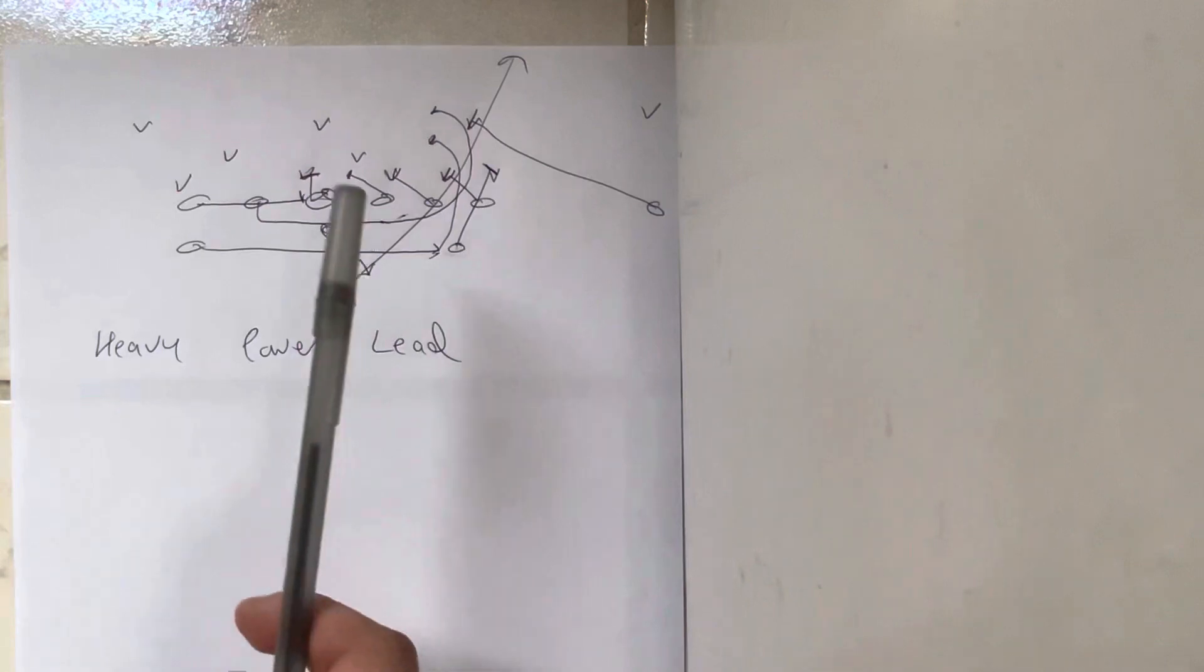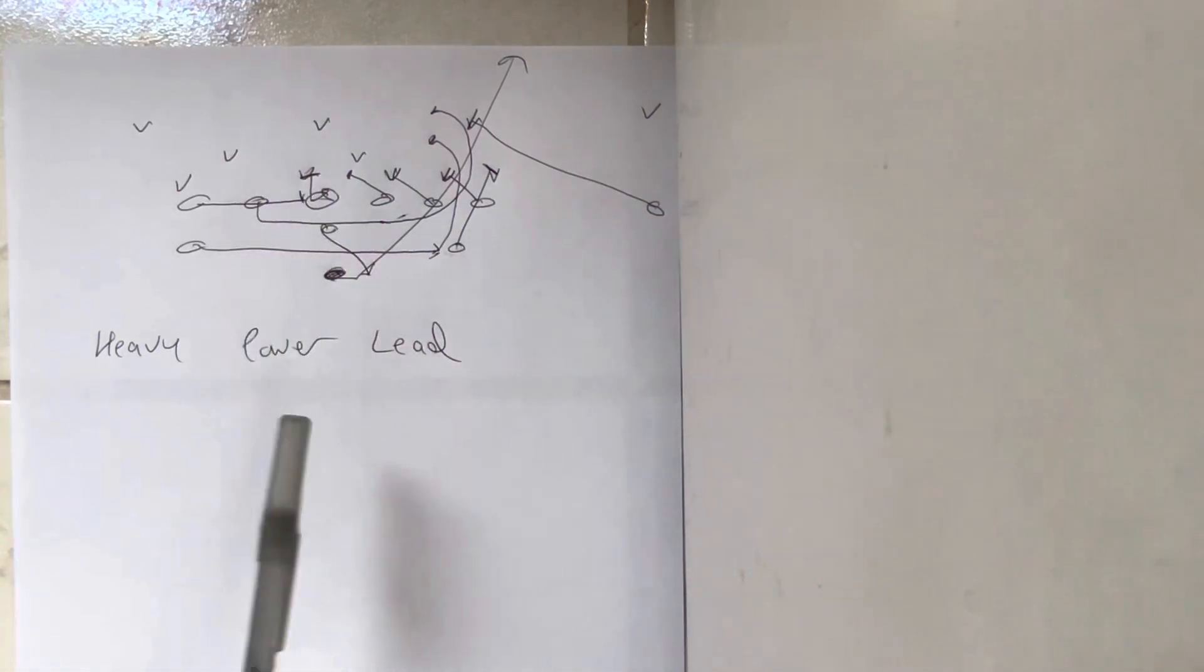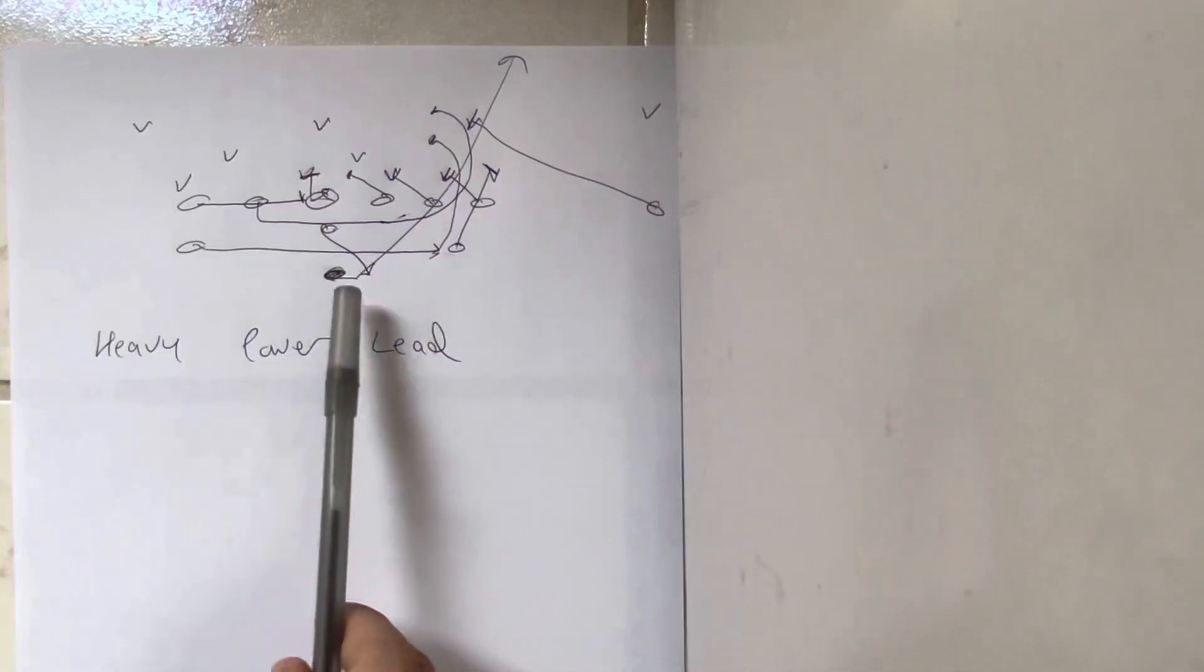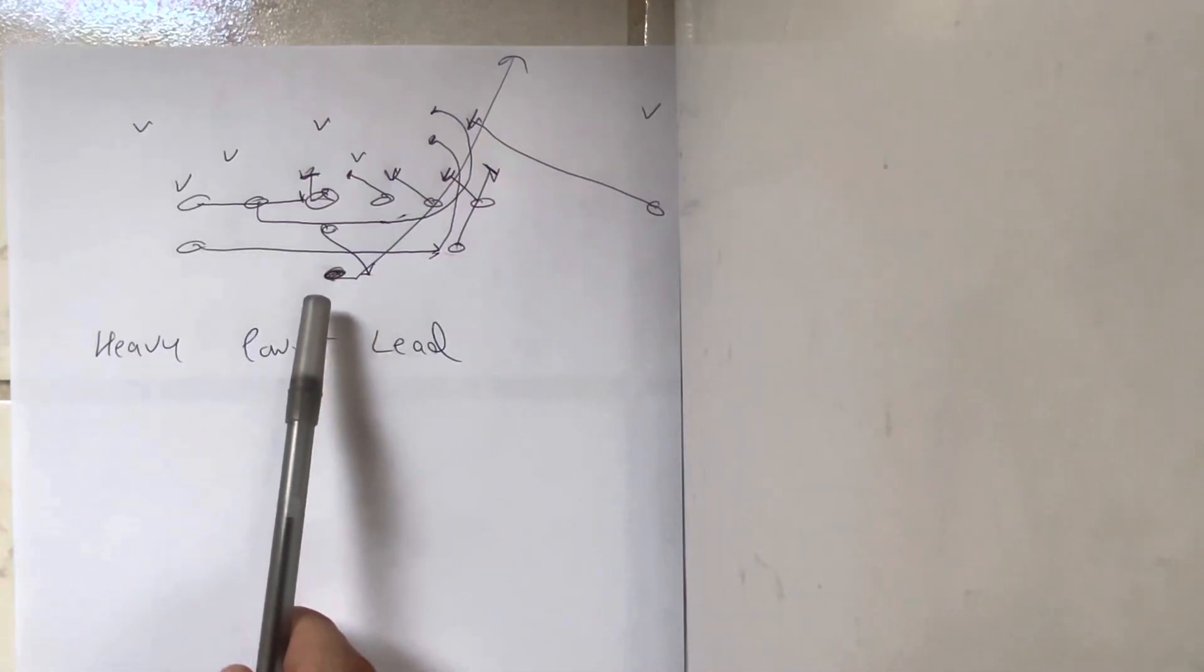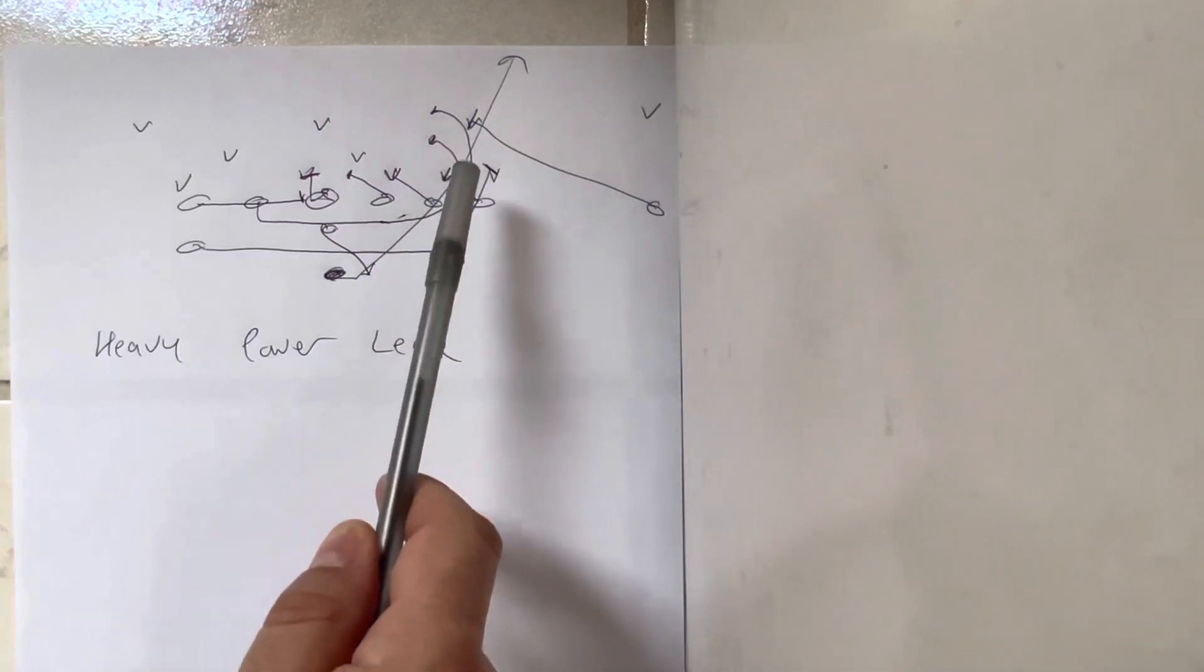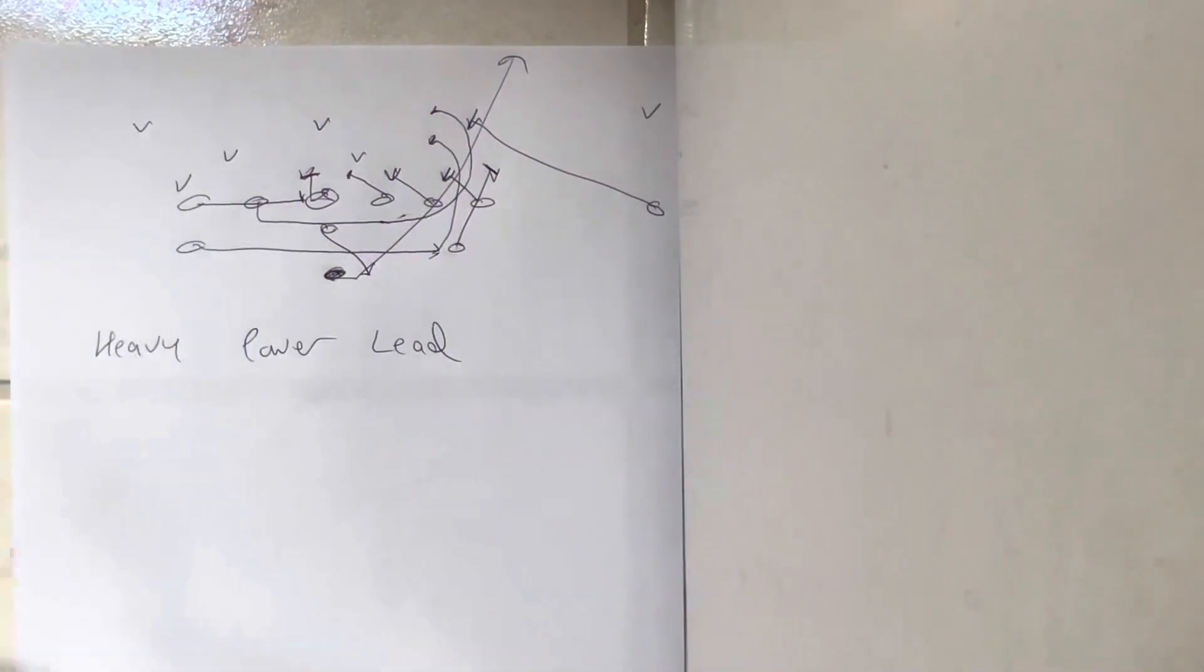Then the quarterback is going to reverse out deep at about 180 degrees. Be back to the lateral step. Wait for the guard to clear. Take the ball. Hug the wall that the heavy tackle makes, get vertical and score. That's the heavy power lead.